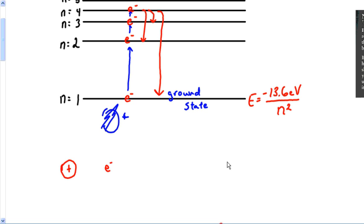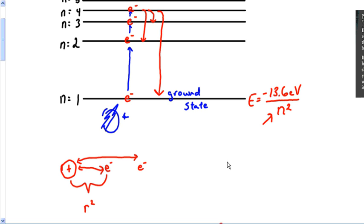Notice this n squared term. If you're trying to figure out where this squared comes from inside the atom, it all goes back to Coulomb's Law. The electron is being attracted to the nucleus by the proton, so there's an attraction there. Coulomb's Law says that the force between those particles decreases by a factor of r squared. As you move the electron farther and farther away, this attraction diminishes by a factor of a square.